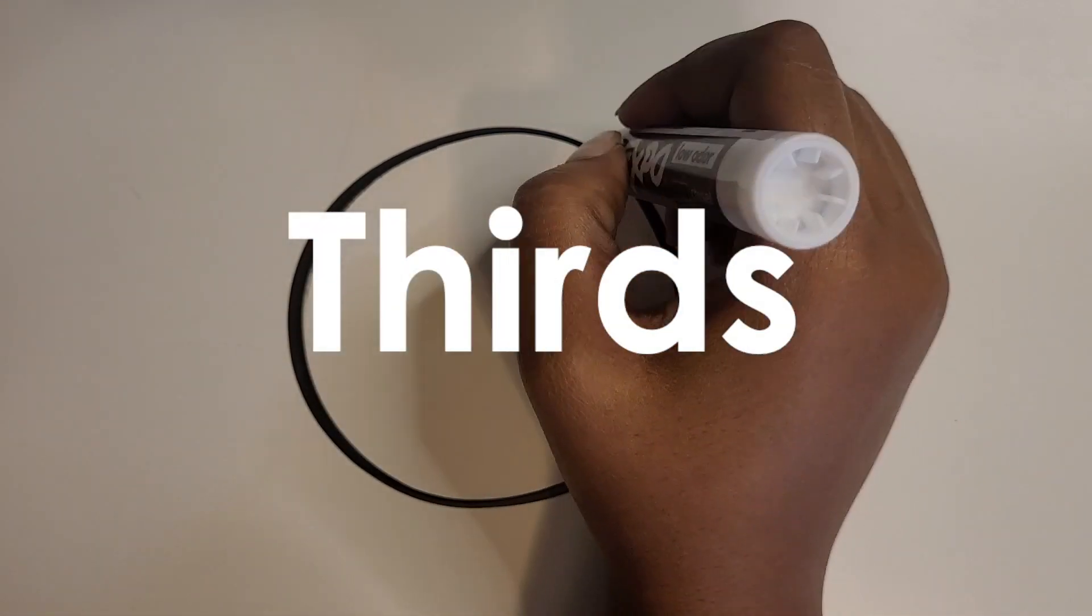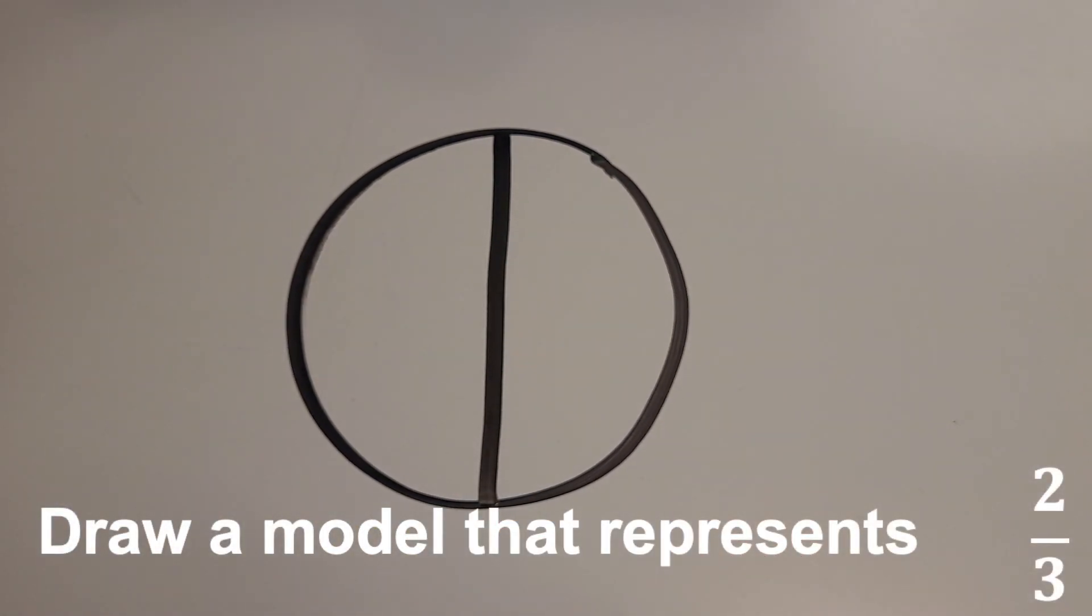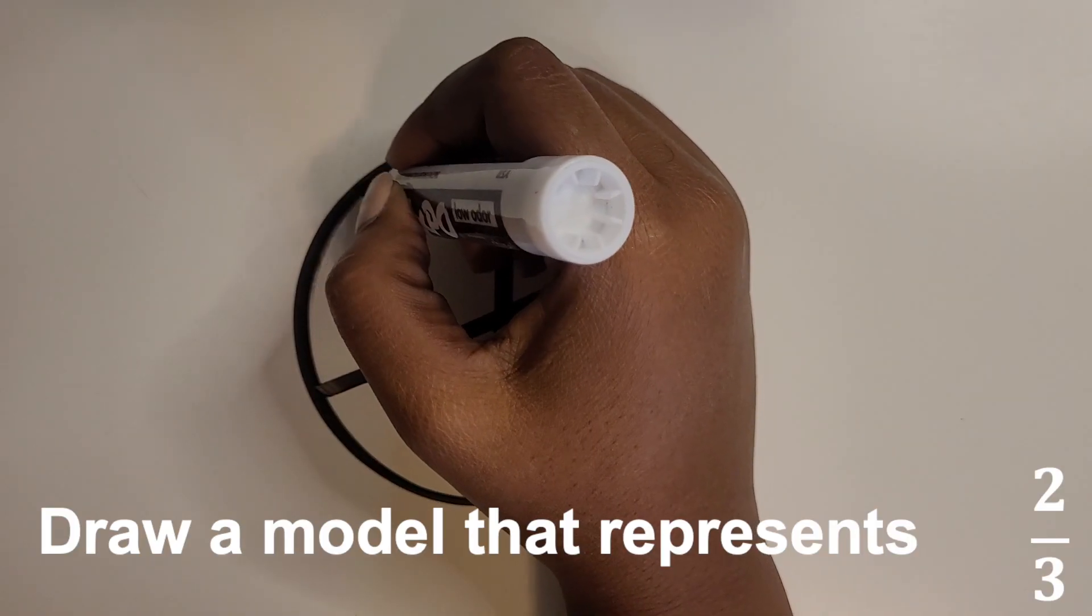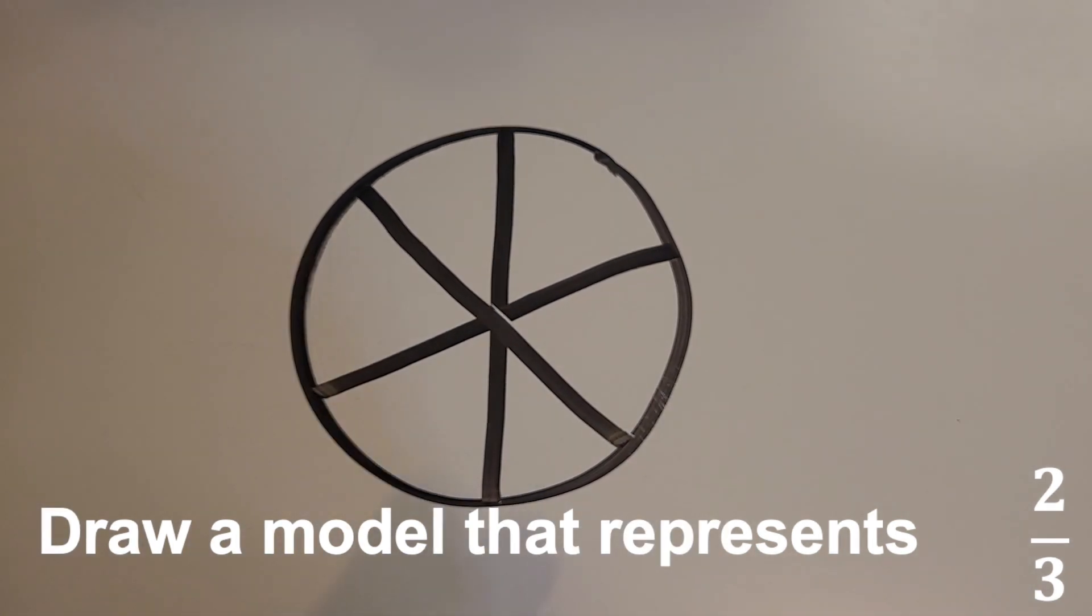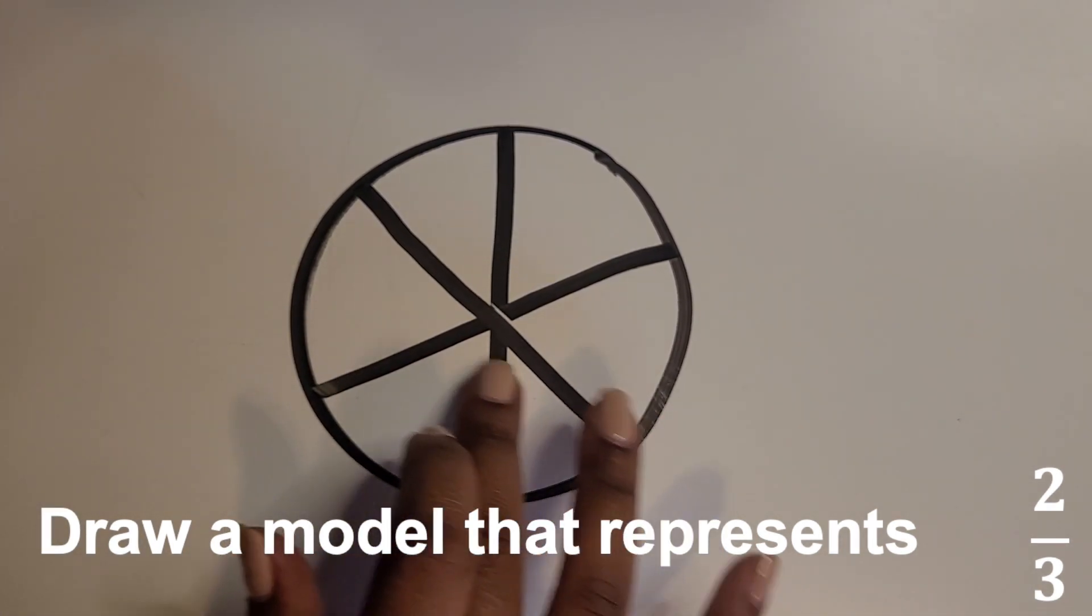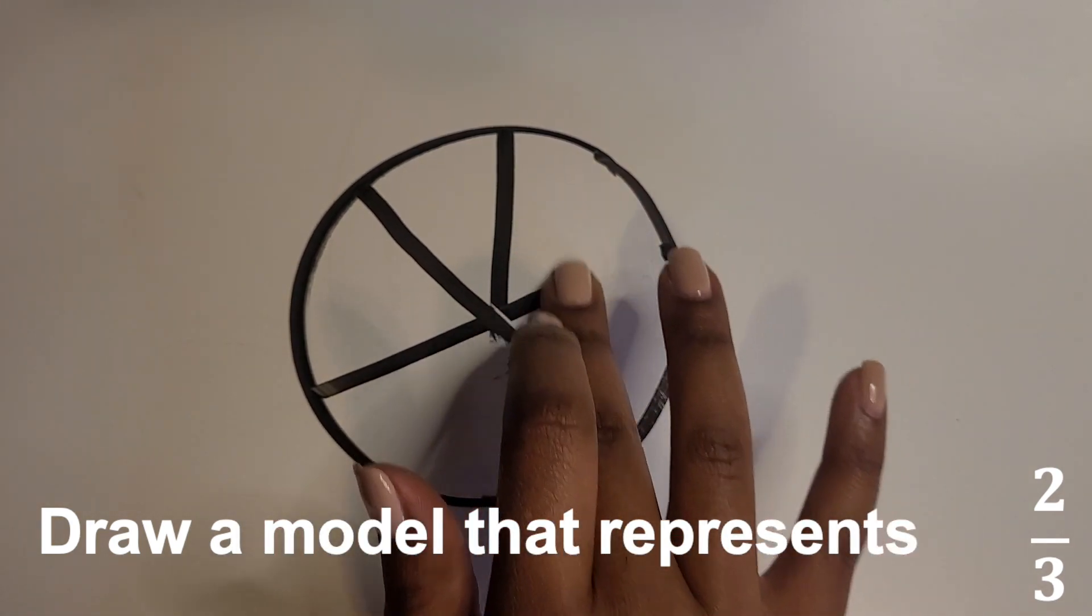Now we're going to use the sixths to actually make thirds this time. We're gonna do the same steps to create the sixths by drawing that line vertically down the middle and then the wide X. But then we're gonna kind of erase every other line. This is just one way that you can represent thirds until you get the hang of where those lines should actually go for thirds.